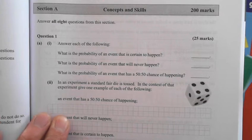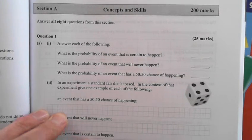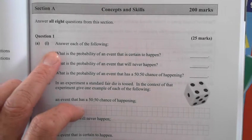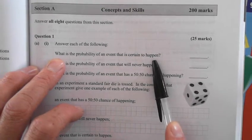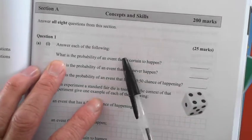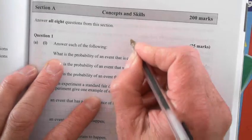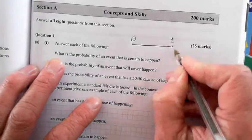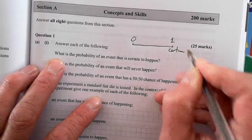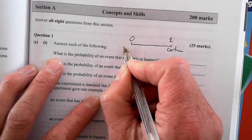Right, so you've got your own sheet in front of you. Pay attention to it. Answer each of the following: What is the probability of an event that is certain to happen? Probability goes between zero and one. One is certain and zero is impossible.